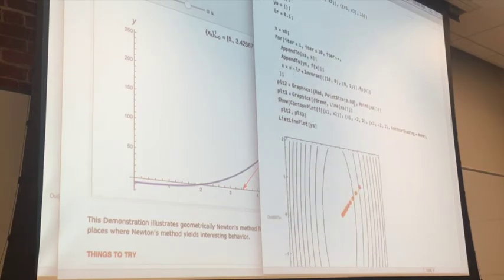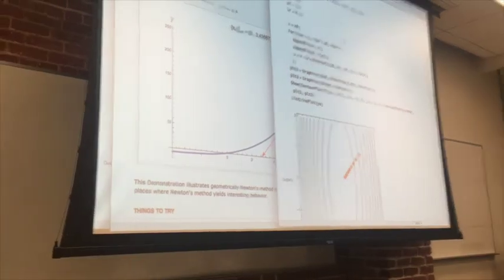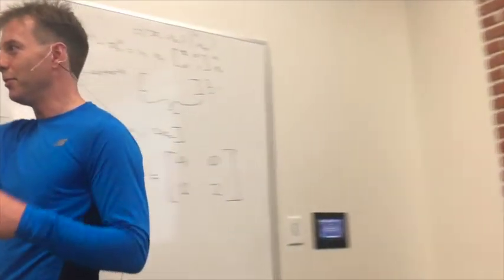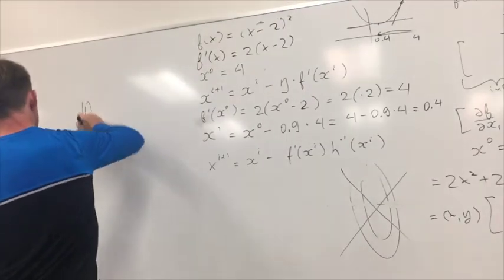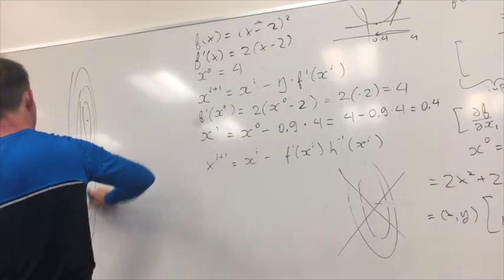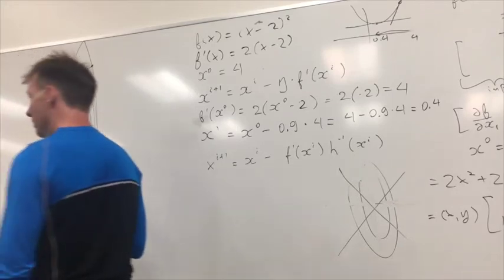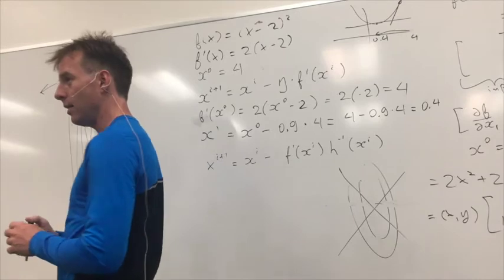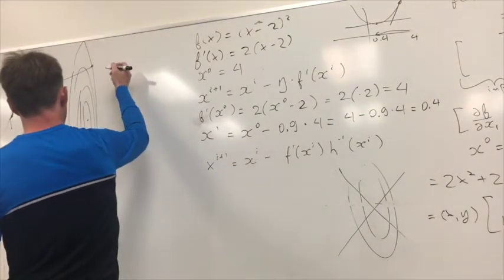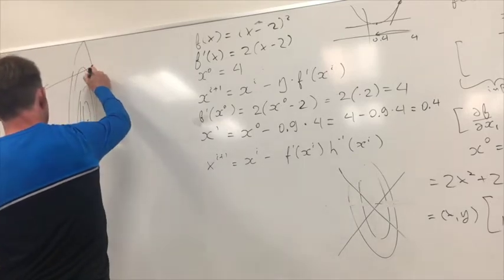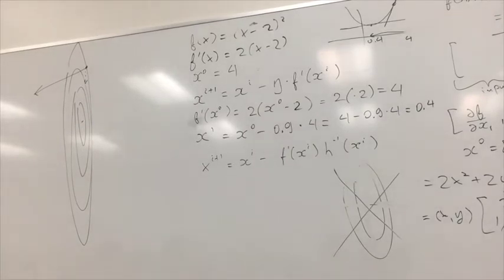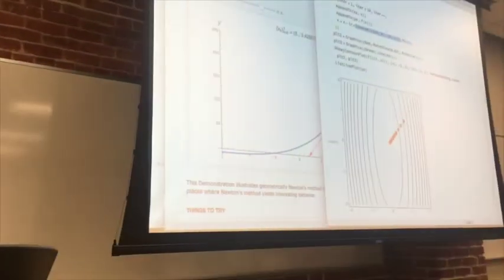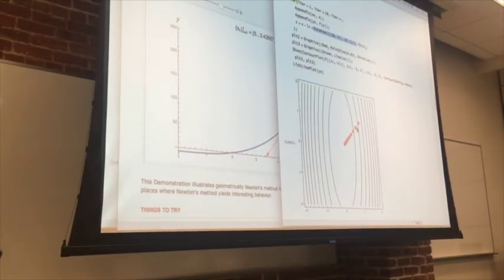When you have highly elongated contours like this, the minimum is here but the gradient is actually pointing a different way. The more squeezed the contours are, the further the gradient direction is from the direction to the minimum. When you apply Newton's method, it multiplies by the inverse of the Hessian matrix, and now it goes directly to the minimum.